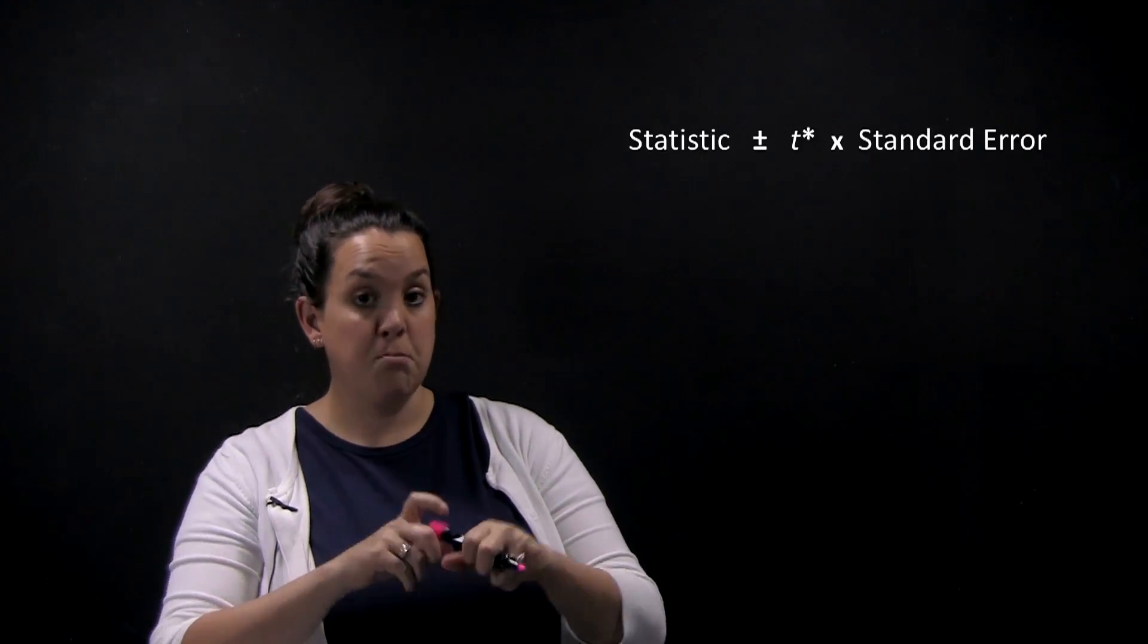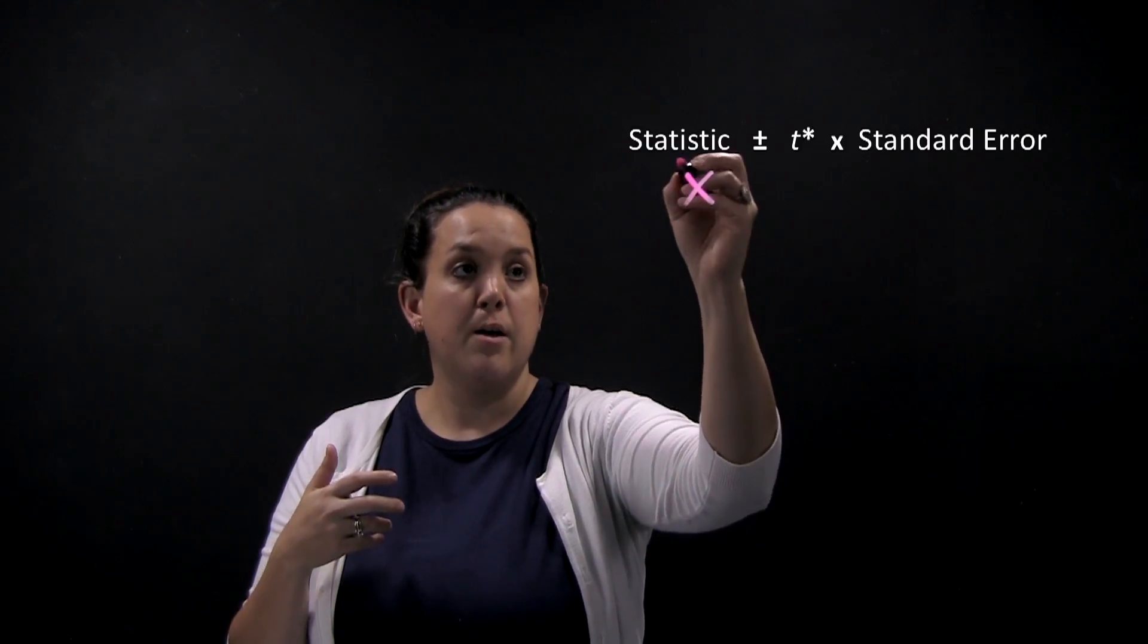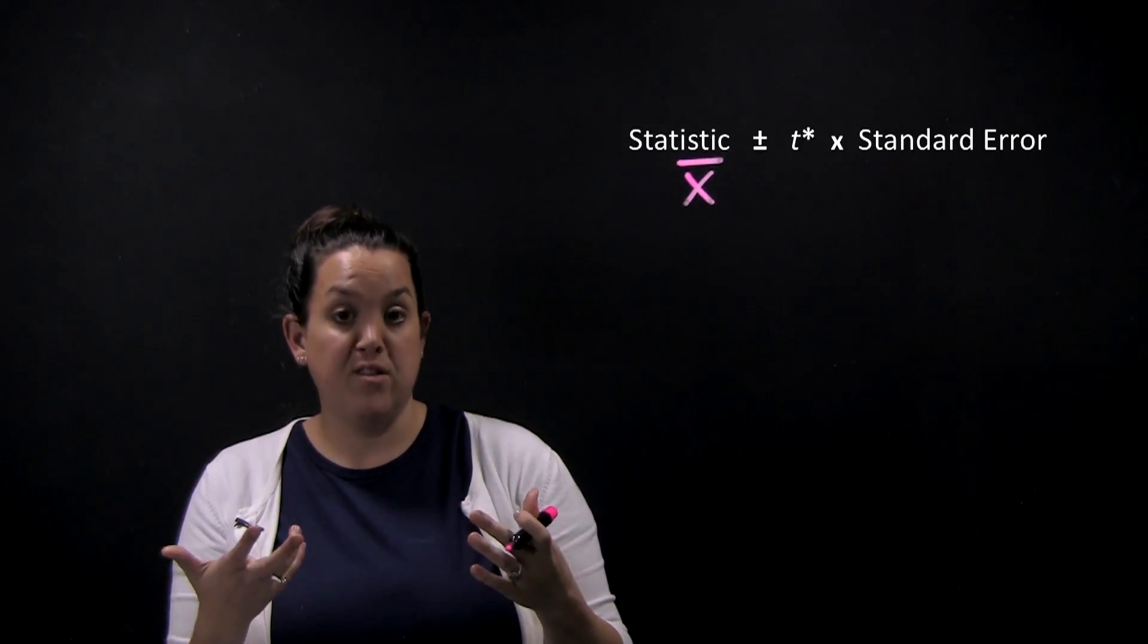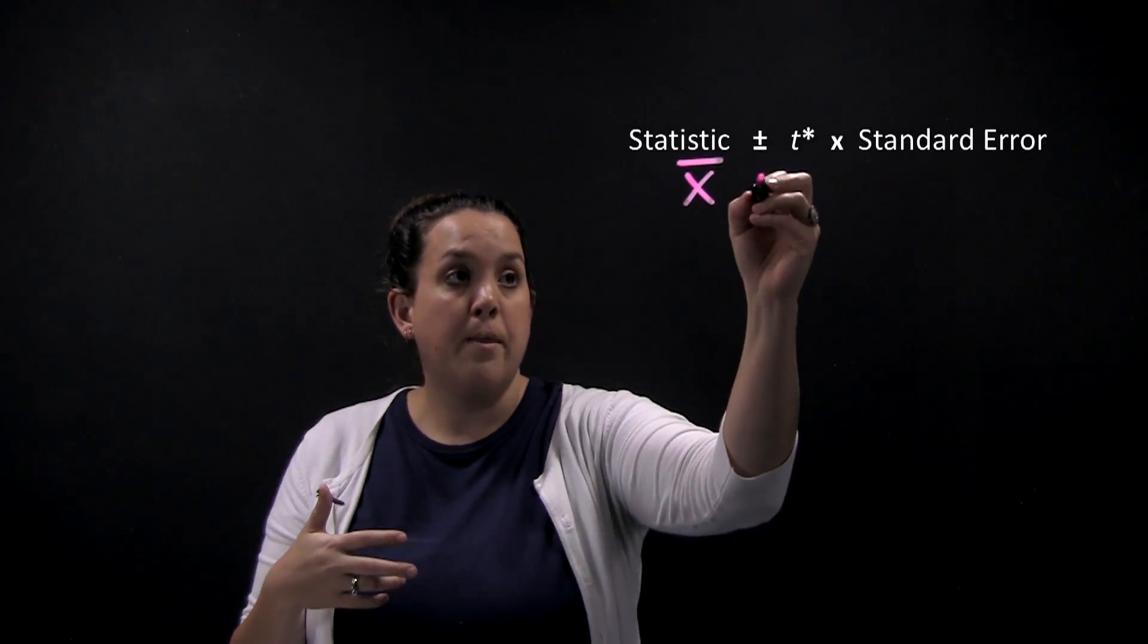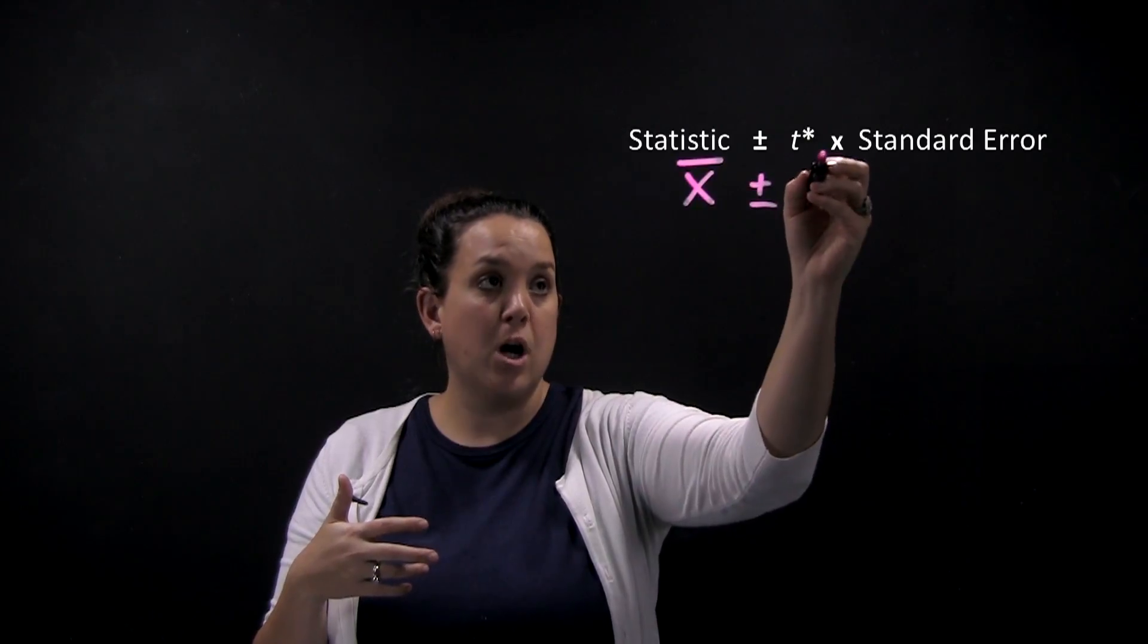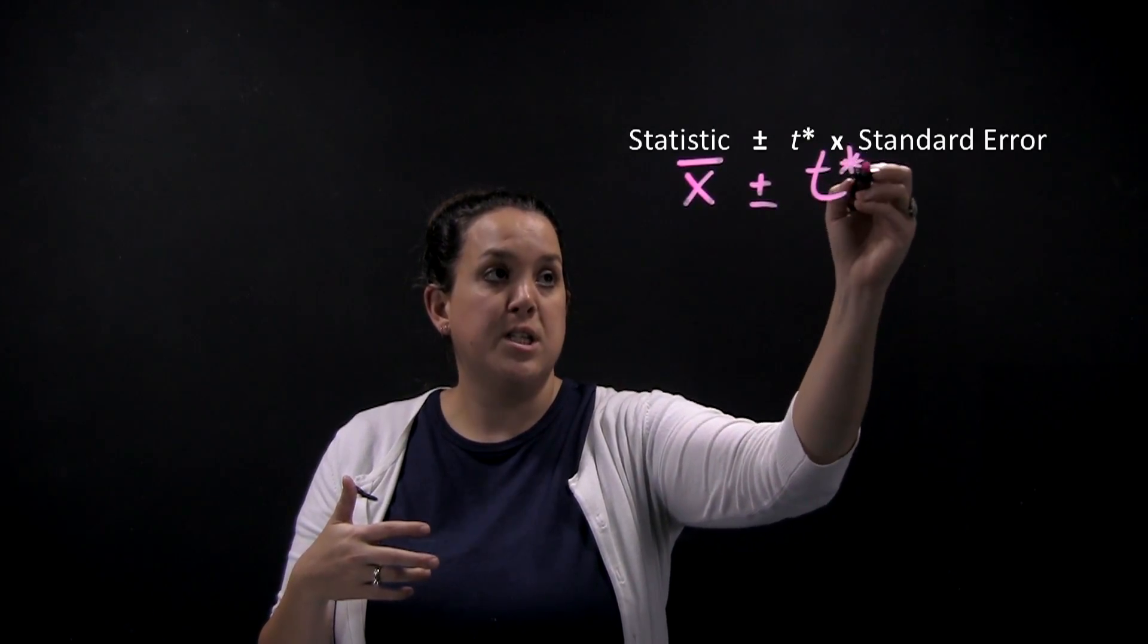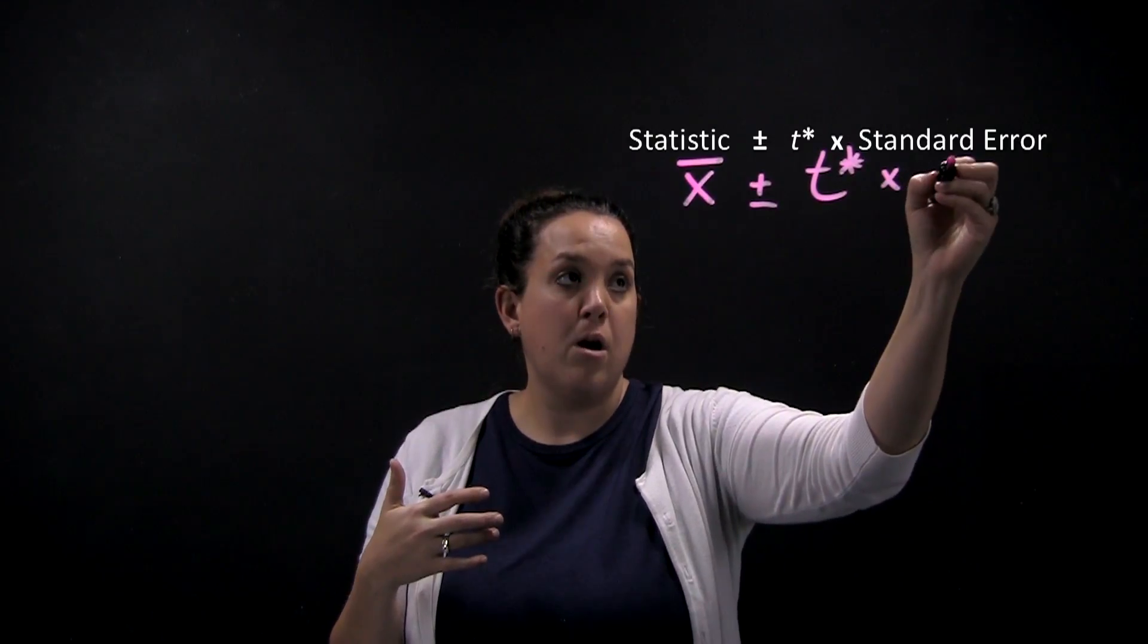So right now, because we're estimating mu, we learned in the information from the sampling distribution that a good estimate of mu—or the statistic that's used for that—is going to be X bar. And then we add and subtract what's called a t star, and we'll talk about what the t distribution is in the next video, times standard error.